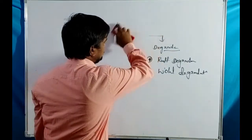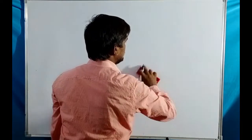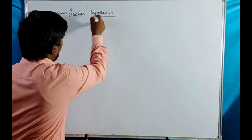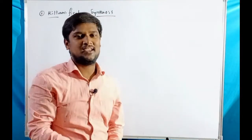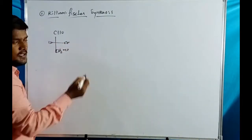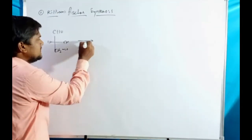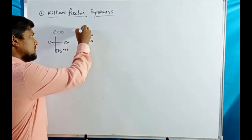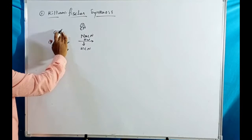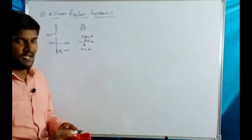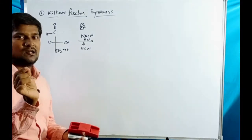The first one is Kiliani-Fisher synthesis, used for chain elongation reactions. Let us take glyceraldehyde — CH2OH, CHOH — the simplest carbohydrate. When glyceraldehyde is treated with sodium cyanide in presence of HCl, these produce H+ and CN−. CN− is the nucleophile, which will attack over the SP2 carbon center — that is, the carbonyl carbon — which has planarity.